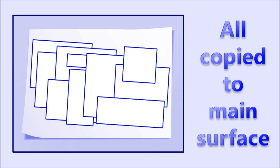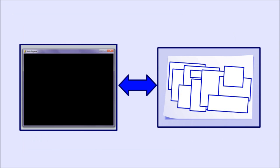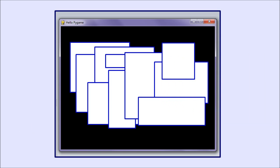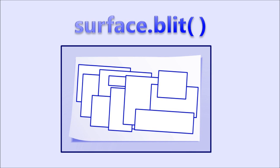This is because only one surface gets displayed to the user — the one returned by display set mode that we call display. And display gets all its information about what to draw from our main surface only. But we might want to be drawing to other surfaces. Indeed, some drawing always results in a new surface — font render, for example. There's no other way to draw text, so we need some way to transfer contents of one surface to another, if only so we can draw text on our main surface. The method that does this is surface blit.